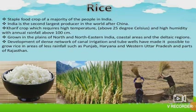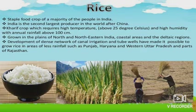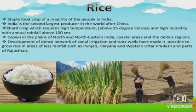Rice is a staple food crop of the majority of people in India. India is the second largest producer in the world after China. It is a Kharif crop which requires high temperature above 25 degrees Celsius and high humidity with annual rainfall above 100 centimeters. It is grown in the plains of north and northeastern India, coastal areas and delta regions. Development of canal irrigation and tube wells has made it possible to grow rice in areas of less rainfall such as Punjab, Haryana, Uttar Pradesh and parts of Rajasthan.